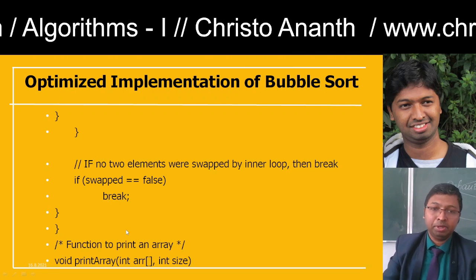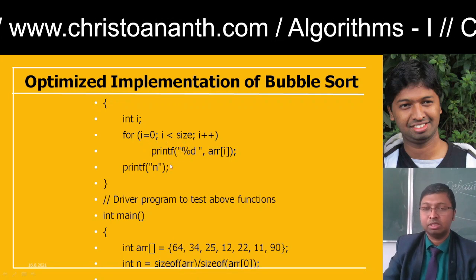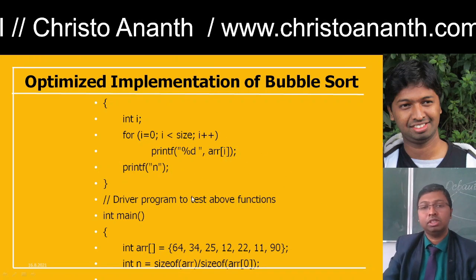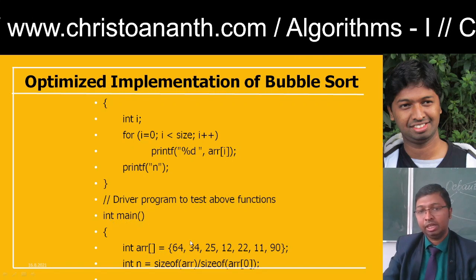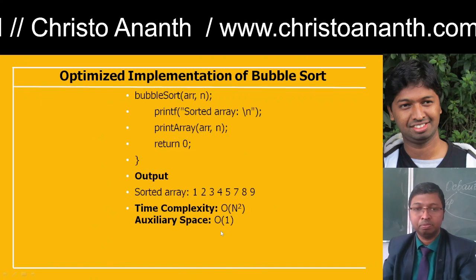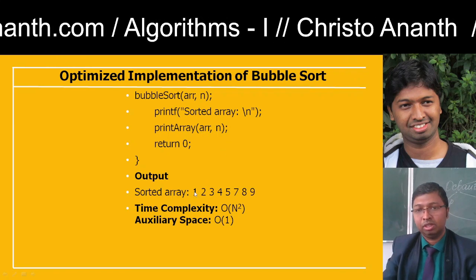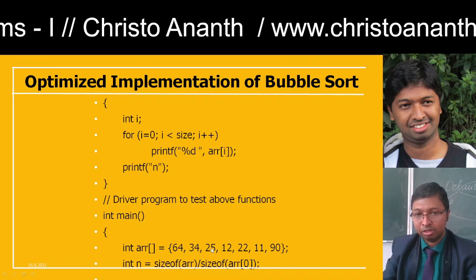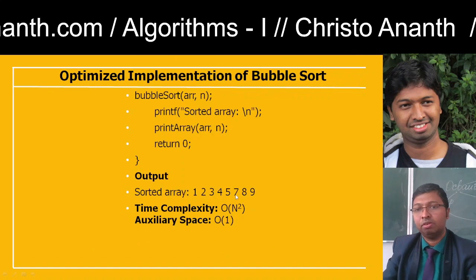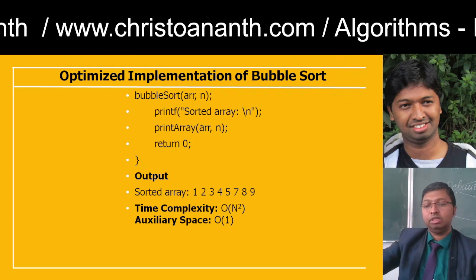The print function is void printArray(int array[], int size): for i equal to 0, i less than size, i++, use printf with %d format to print array[i]. In the main driver code, the array is {64, 34, 25, 12, 22, 11, 90} and n equals sizeof(array) divided by sizeof(array[0]). Call bubbleSort(array, n) and printArray(array, n). The sorted output will be 11, 12, 22, 25, 34, 64, 90. Time complexity is O(n²) and auxiliary space is O(1).